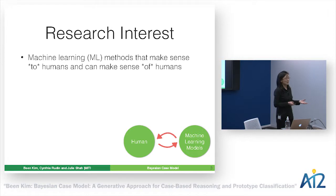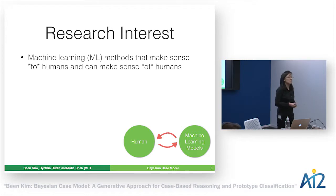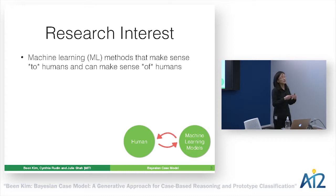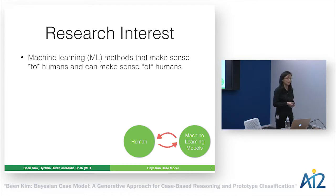For disaster responders, for example, there's no way they're going to make important decisions — like who to save first — just because a computer tells them that's the best answer. So the first way to make machine learning useful is to make transparent systems that humans can understand and that make sense to humans.